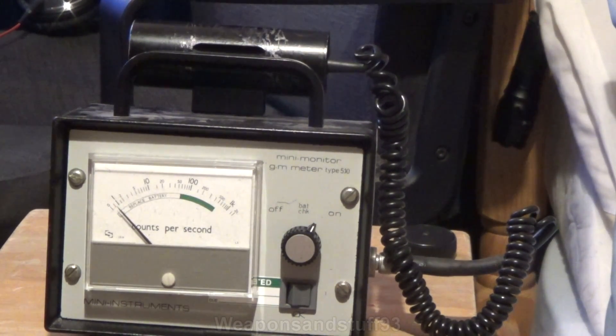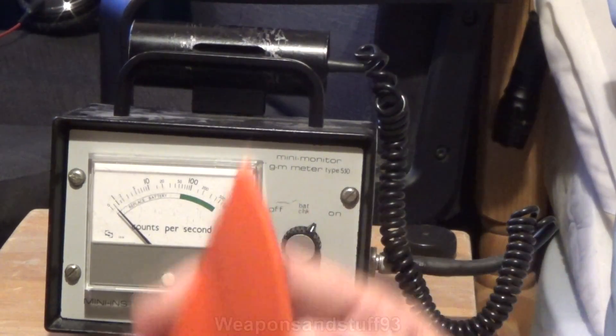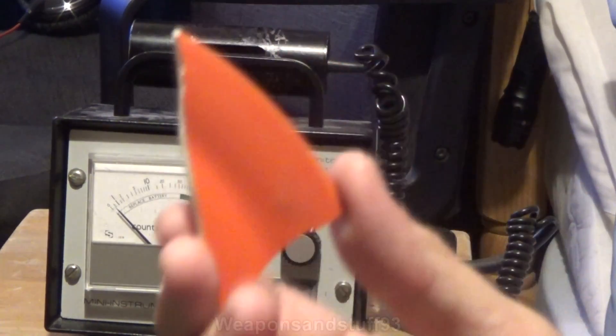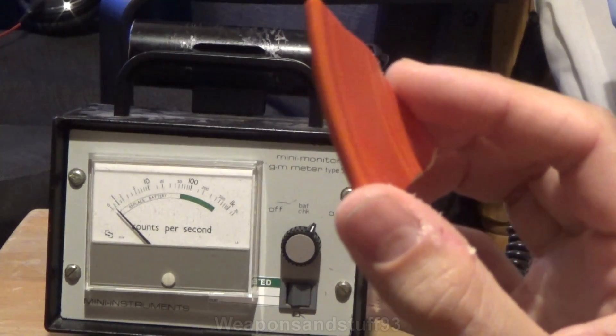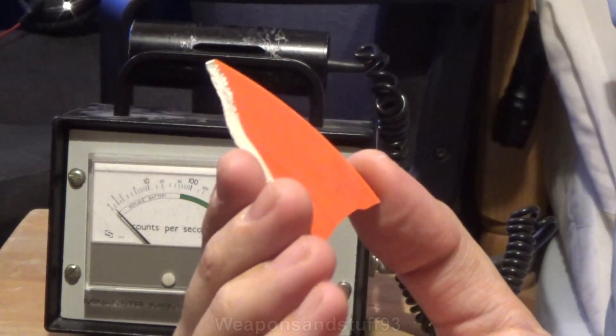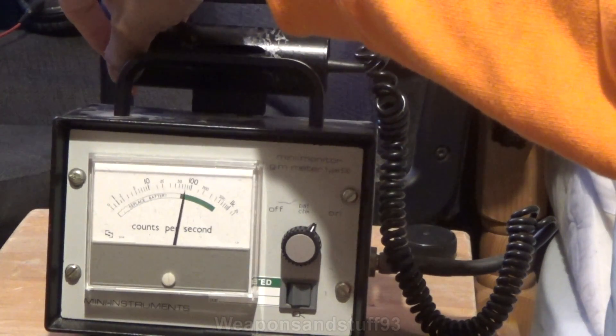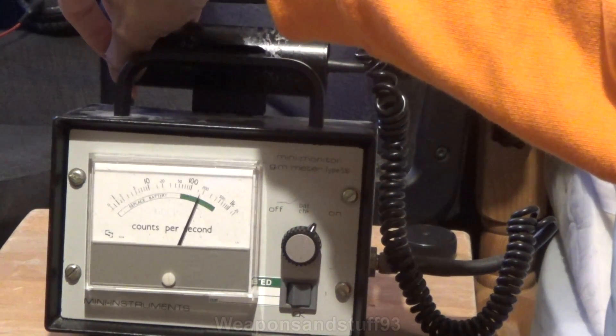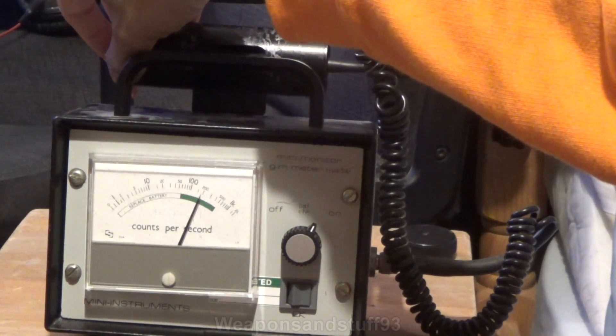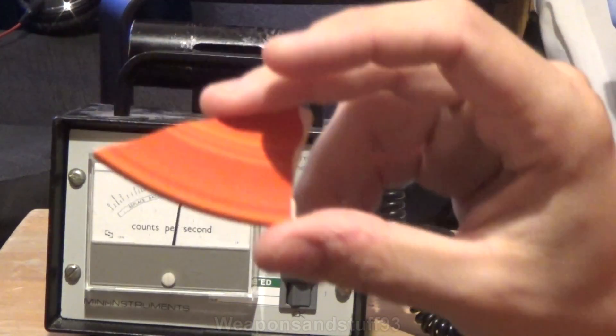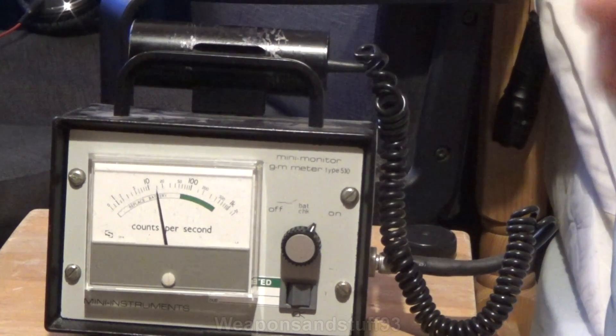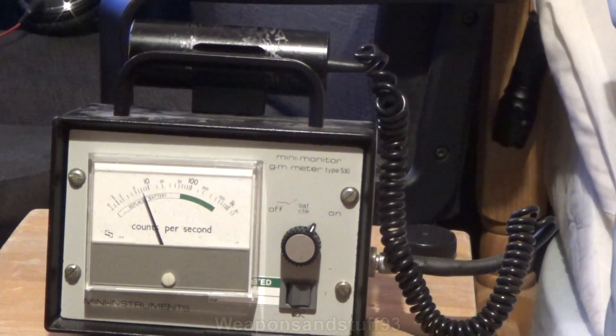Now, one of my favorites, the fiesta ware. Fiesta ware was where they used to think it was a good idea to paint uranium glaze on plates you'd eat out of and mugs and everything. So let me show you what happens if you put this next to the Geiger counter. 150 to 200 counts per second. So you really wouldn't want to eat off this stuff, would you? But people did.